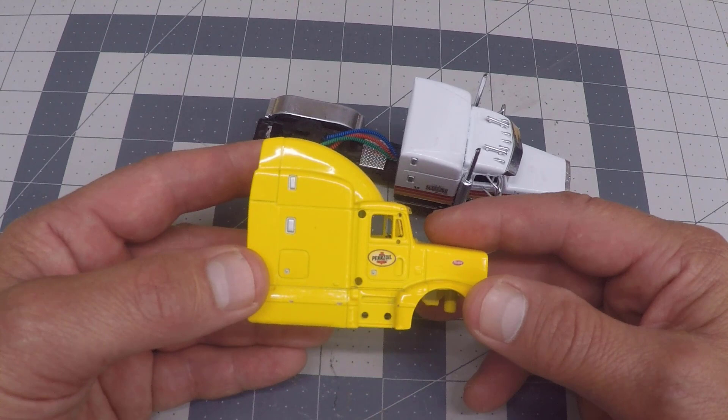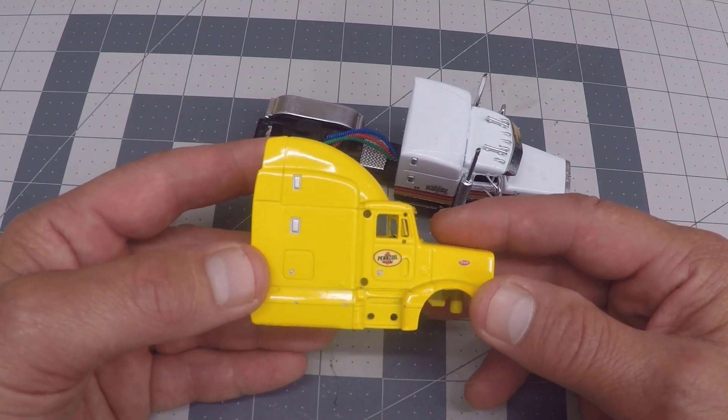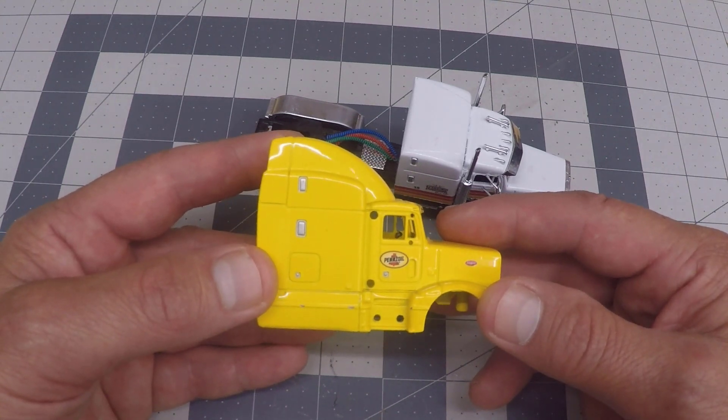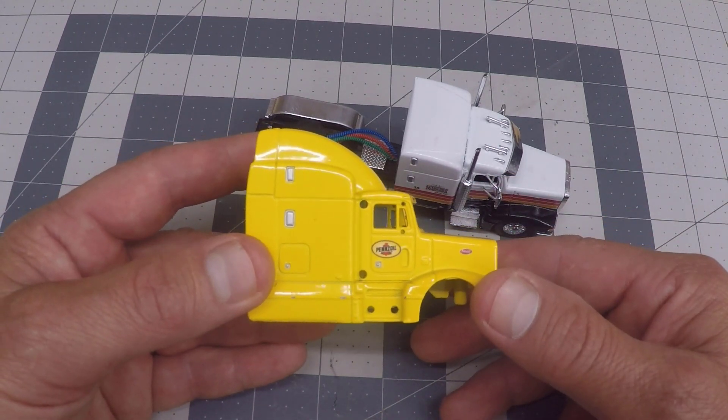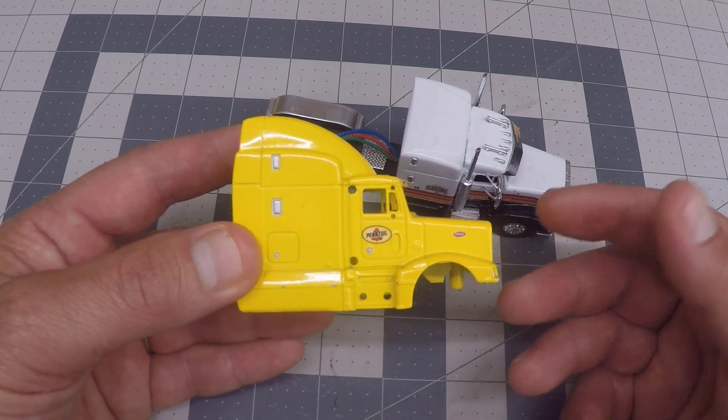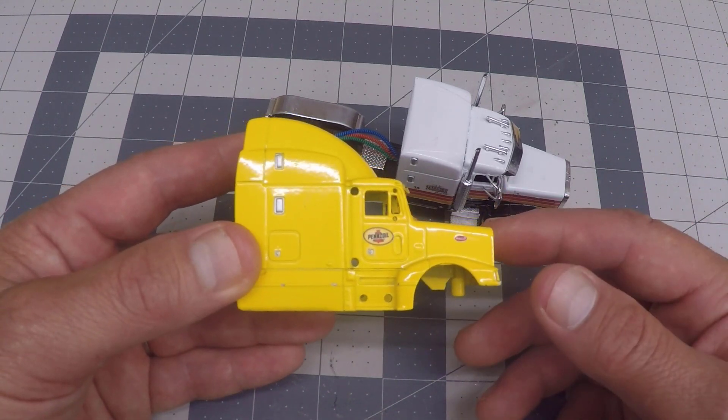To begin this project, you'll need a stock 377 by Gearbox. They are getting a little harder to find as Gearbox Manufacturing went out of business some years ago, and you can find these at toy shows, and it seems like I have good luck on eBay.